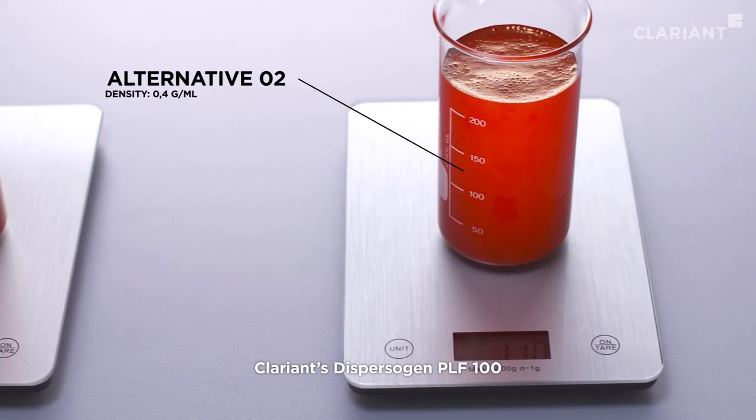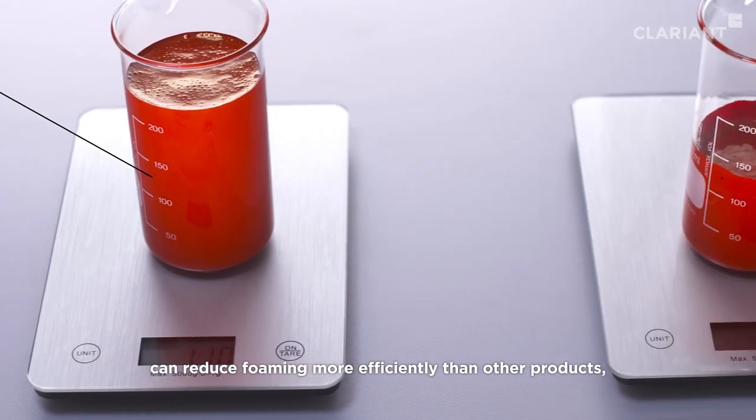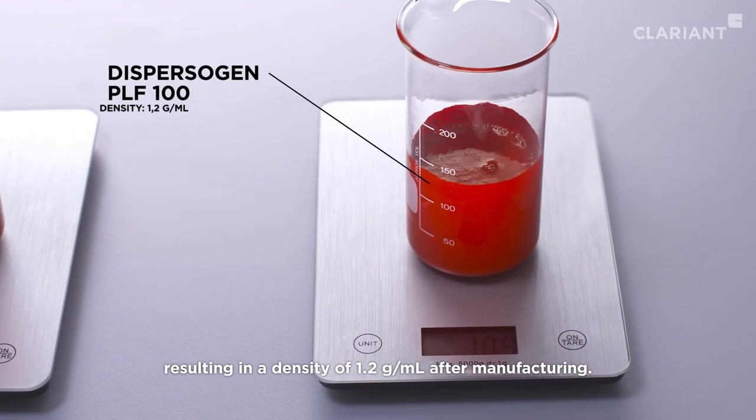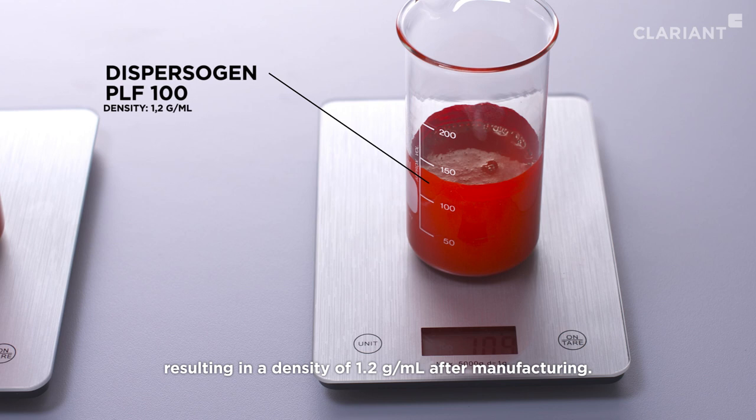Clariant's Dispersogen PLF100 can reduce foaming more efficiently than other products, resulting in a density of 1.2 grams per milliliter after manufacturing.